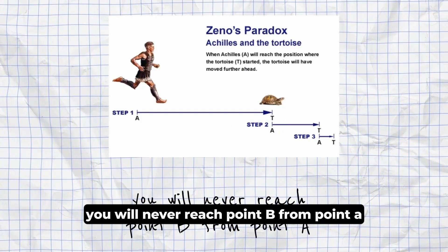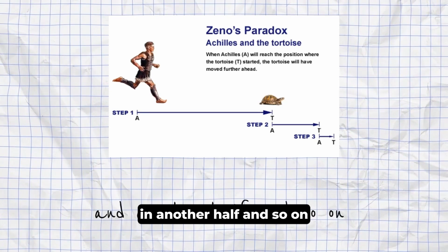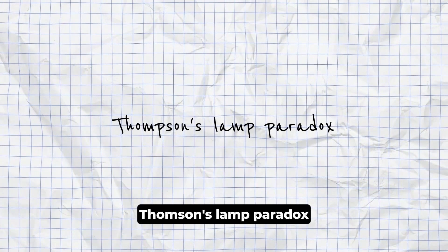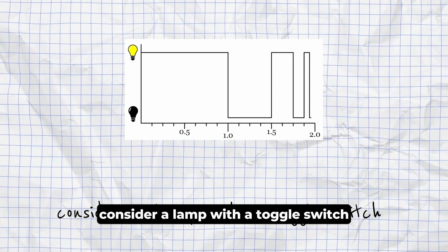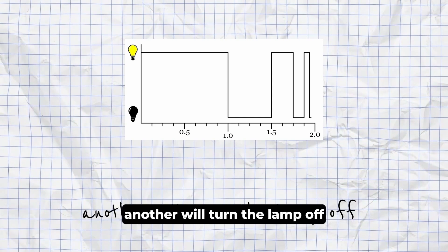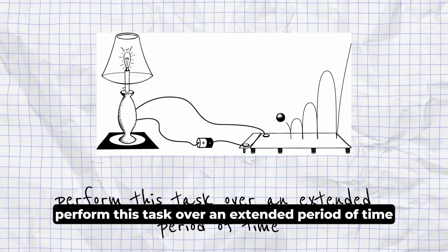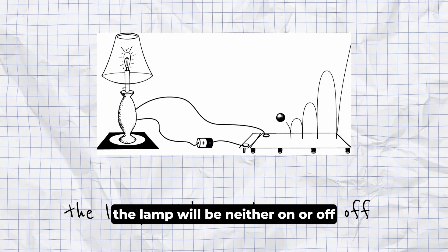Zeno's Paradox. You will never reach point B from point A, as you must always go halfway there, and another half, and so on. Thompson's Lamp Paradox. Consider a lamp with a toggle switch. Flipping the switch once turns the lamp on. Another will turn the lamp off. Now suppose you perform this task over an extended period of time. The lamp will be neither on or off.